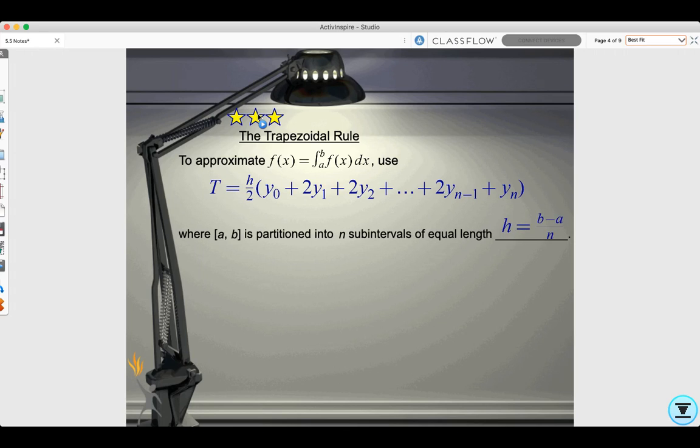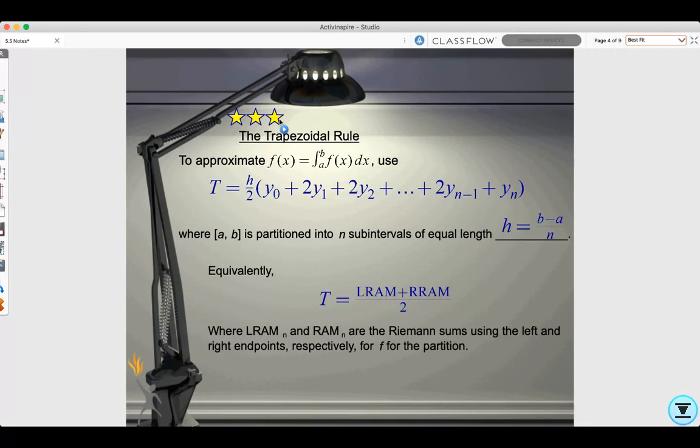Where a to b is partitioned into n subintervals of equal length and h is (b - a)/n. Equivalently, T is the left rectangular approximation plus the right rectangular approximation divided by 2, where the left and right rectangular approximations are Riemann sums using the left and right endpoints respectively for f for the partition.